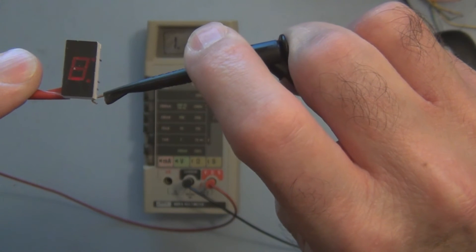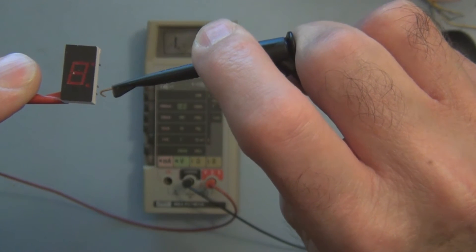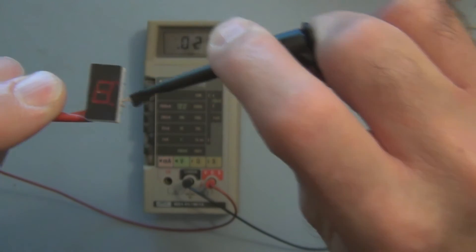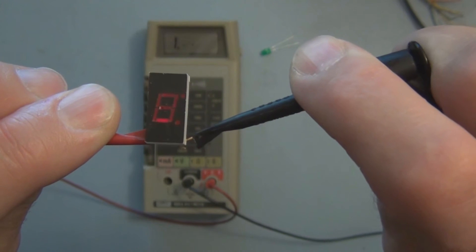Now you can see there, I just happen to—because I've done this before—this is a common anode, so I'm applying the negative lead and I'm able to light up these individual segments.